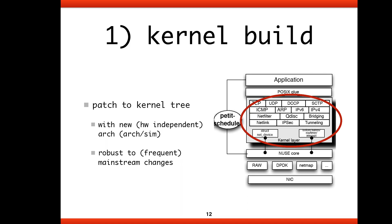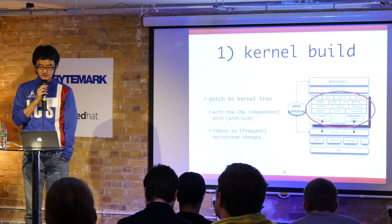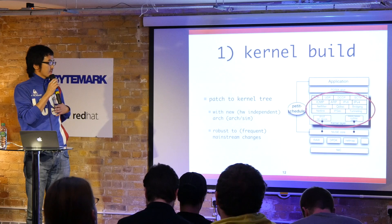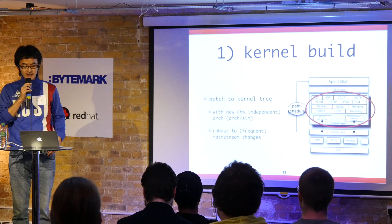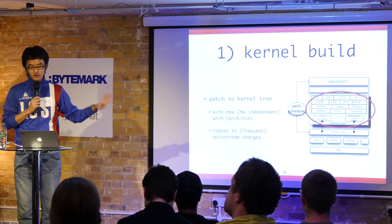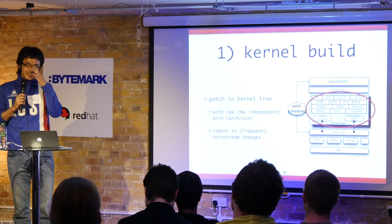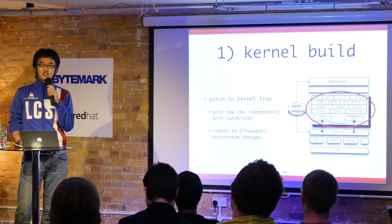The first component is the kernel modification. We provide patches to the kernel source tree to enable the user-space networking library. We concentrate on adding wrapper features into a newly introduced hardware-independent architecture called ArcSIM. By containing all modifications within this hardware-independent architecture, we can easily track the latest upstream kernel code, because we almost don't touch any original code in order to use this library version of the networking stack.